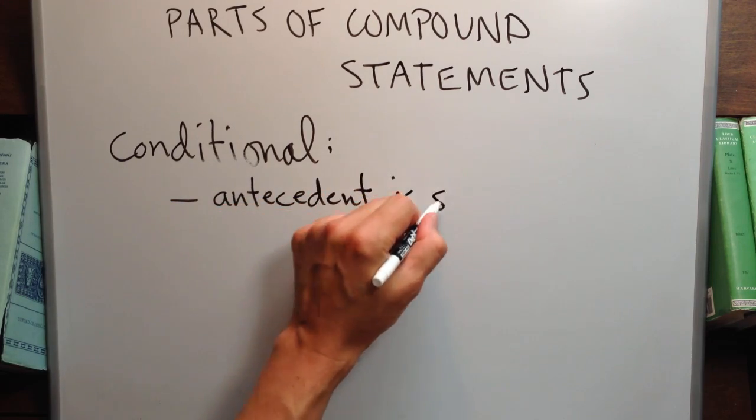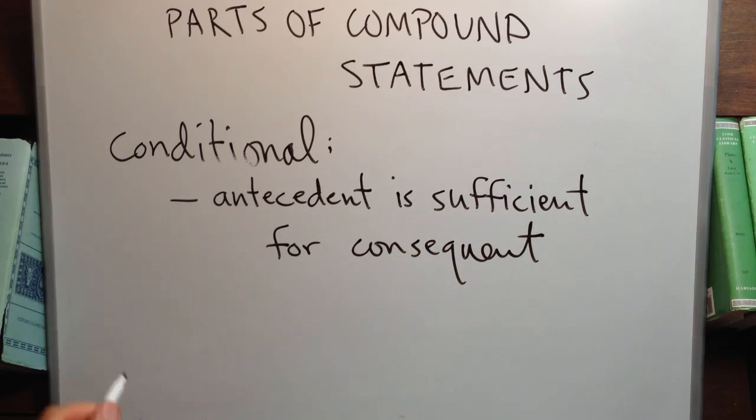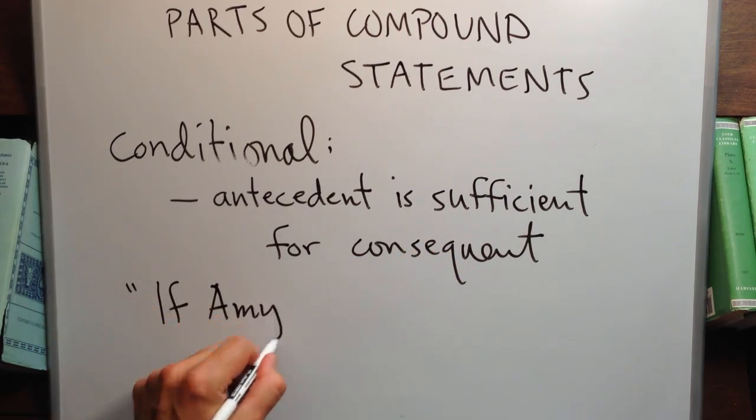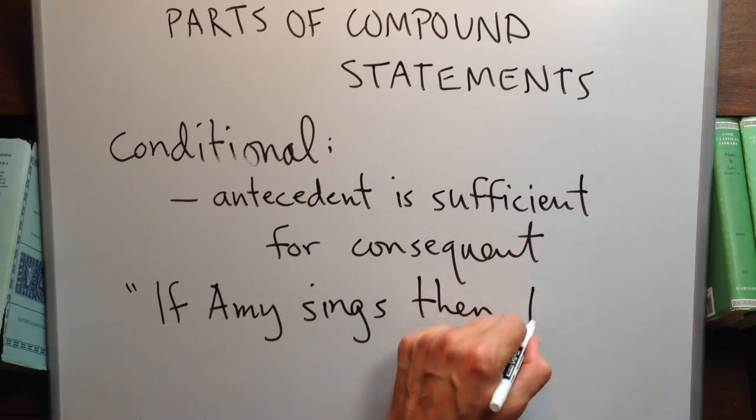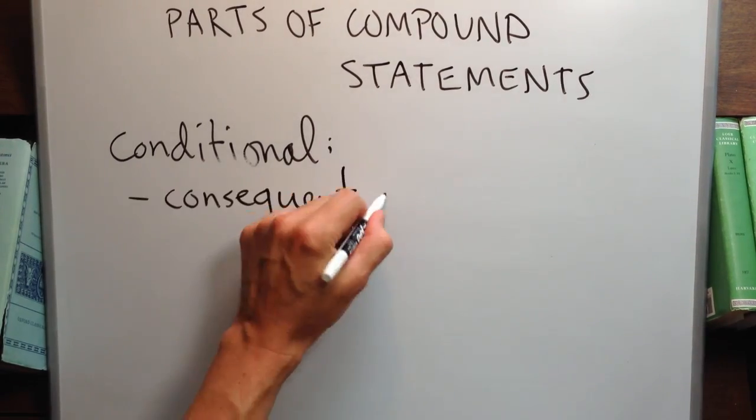The antecedent is a sufficient condition for the consequent. For example, if I say, if Amy sings, then Ted dances. Amy sings is the antecedent. Ted dances is the consequent.